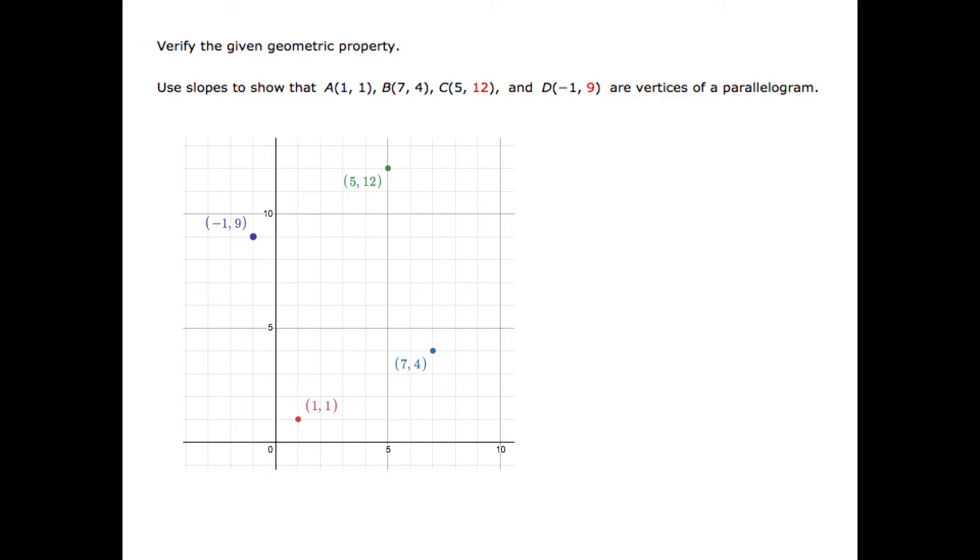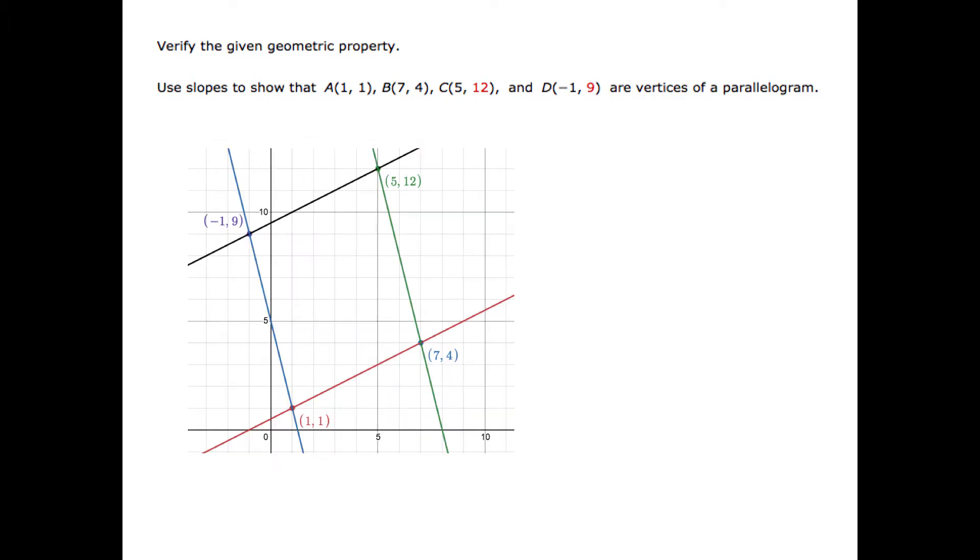If we graph these points, it does appear as though they might form a parallelogram if they are joined. And when we join them with line segments, it does appear that this might be a parallelogram as it does appear that we have two pairs of parallel lines. But just to say that it appears to be a parallelogram isn't sufficient, we would need to verify that mathematically, and we can do that using the slope formula.